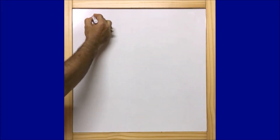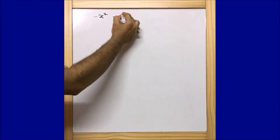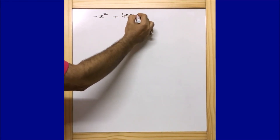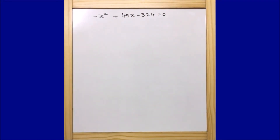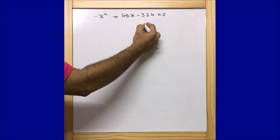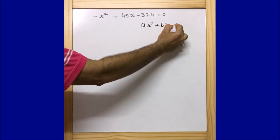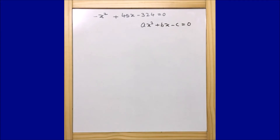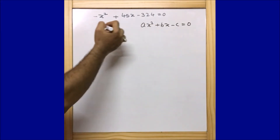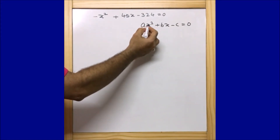The first equation is: minus x squared plus 45x minus 324 equals 0. One thing I want to make very clear — a quadratic equation is always of the form ax squared plus bx plus c equals 0.